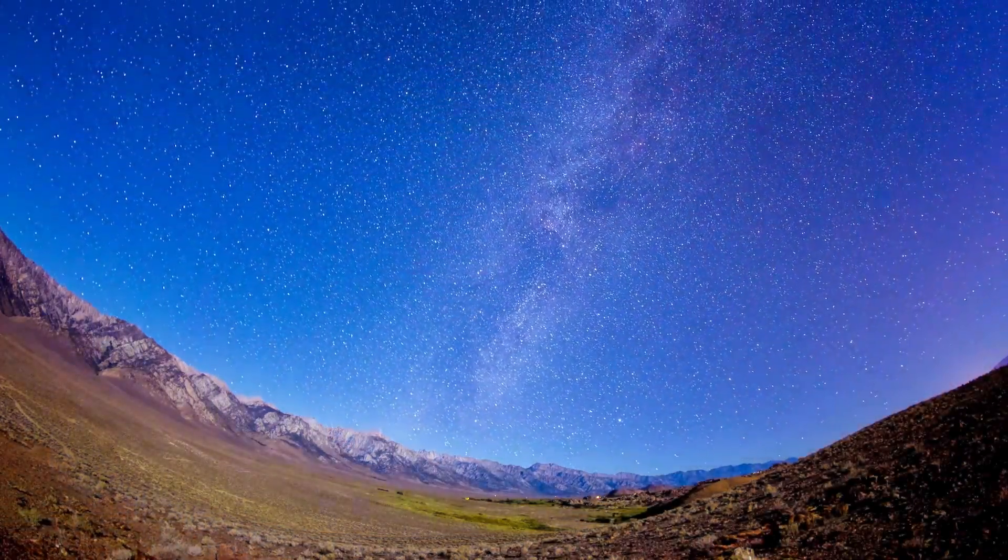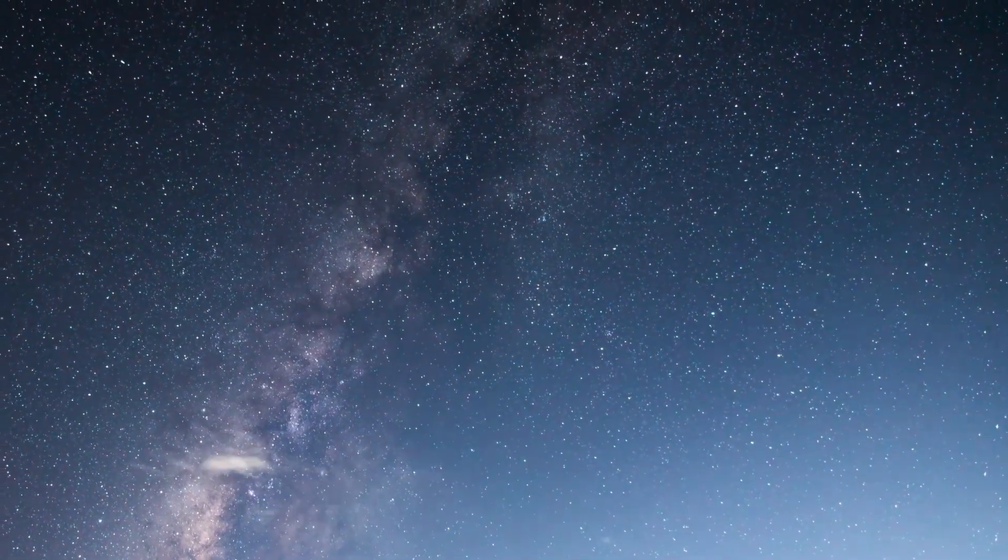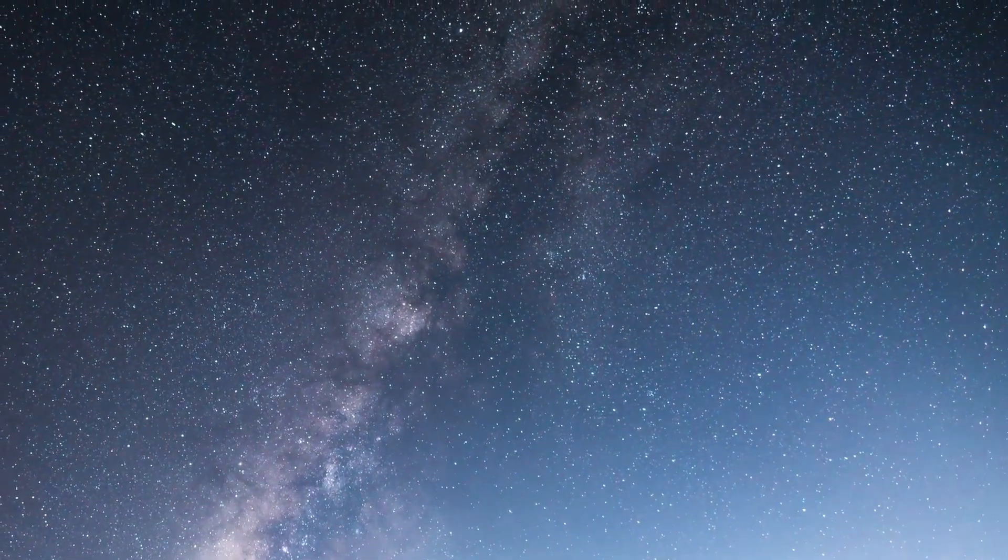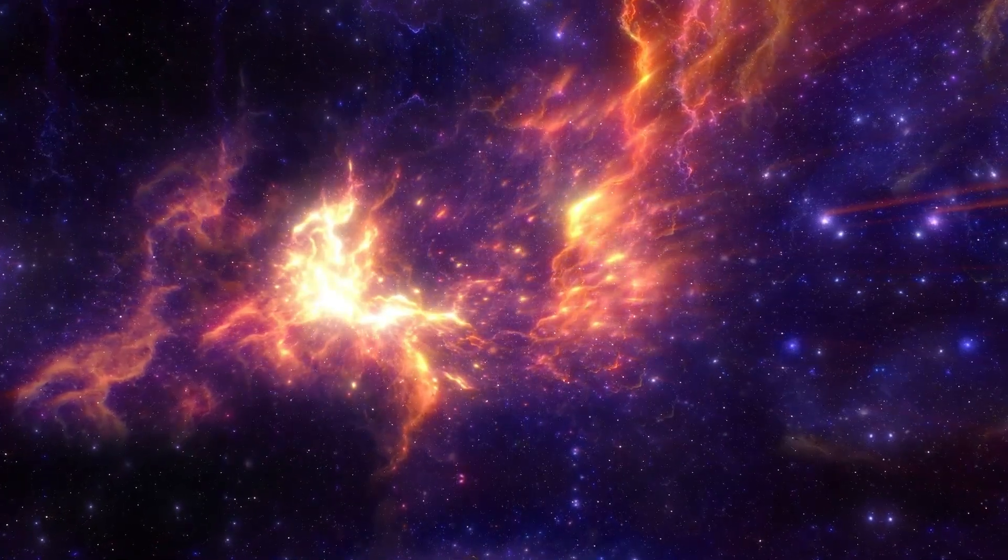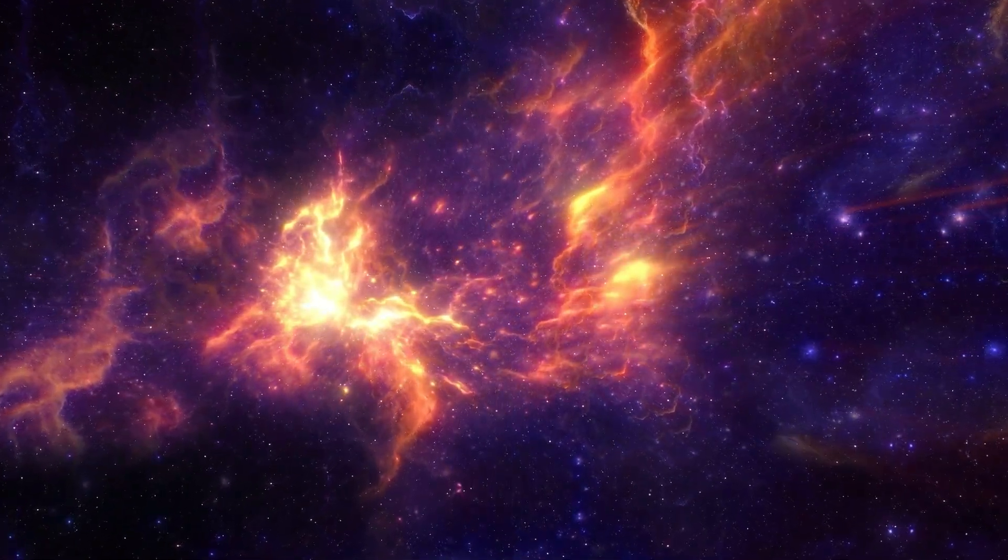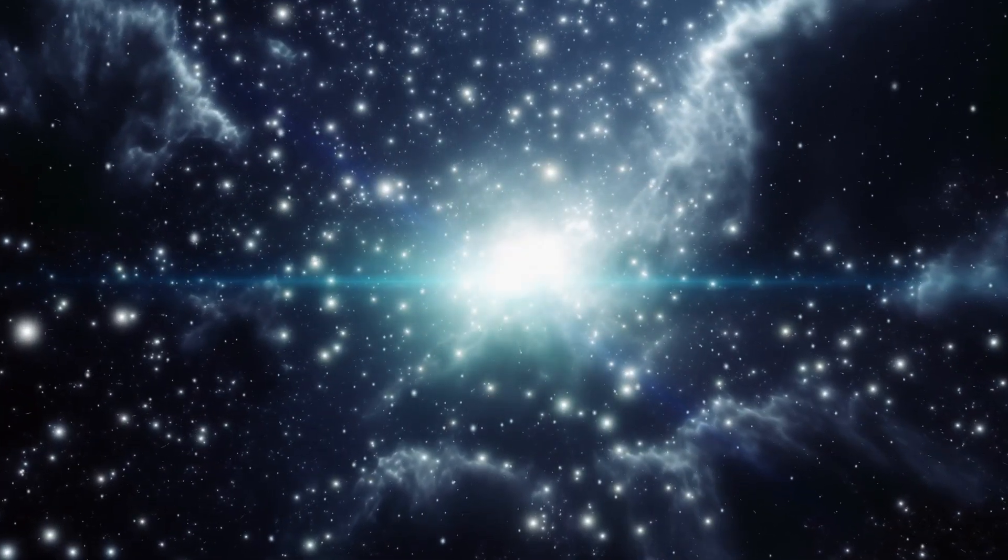If a supernova were to occur closer to us, within 100 light years, it could have significant consequences. Stars like Alpha Centauri, which are within this range, could pose a potential threat if they were to explode. However, Betelgeuse, while relatively close, is located beyond this danger zone, meaning that we are not in immediate danger from its eventual supernova. Nevertheless, scientists are keeping a close watch on Betelgeuse, as its unpredictable nature makes it a star of great interest.